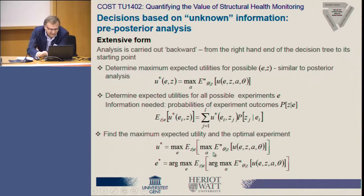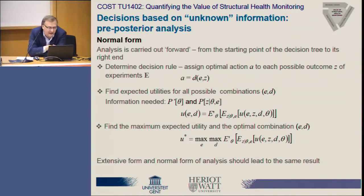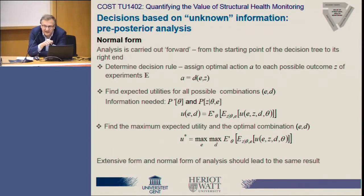Now we consider the normal form. In this case, the analysis is carried out forward from the starting point on the left-hand side of the tree to its right end. The first step is to formulate the so-called decision rule — we assign an optimal action A to each possible outcome of our inspection. For each possible outcome, we select the action that leads to the maximum utility. This is quite similar to the first step of the extensive form.